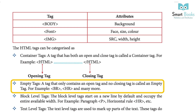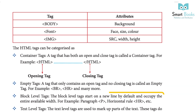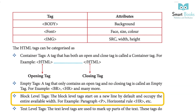Block level tags: A block level tag starts on a new line by default and occupies the entire available width. For example, paragraph (p), horizontal rule (hr), etc.